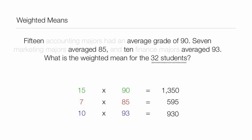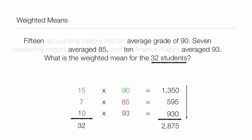If we add 15 plus 7 plus 10, that adds to 32 students. Now if we add this column — 1,350 and all the others — that adds to 2,875.